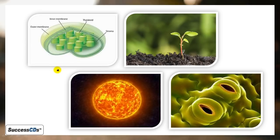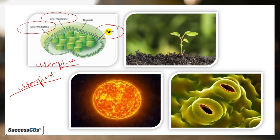Before that, let's understand chloroplast structure. Chloroplast has two membranes - an outer membrane and an inner membrane. The fluid inside chloroplast is called stroma, or we can also call it matrix.